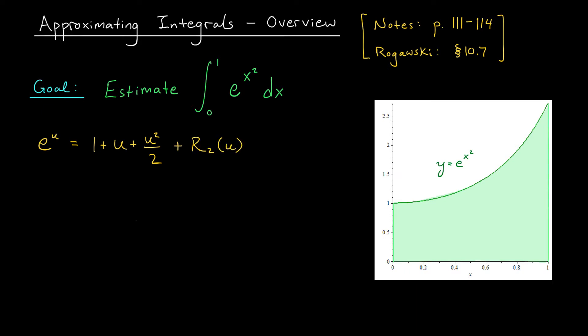Now, since we're interested in the function e to the x squared, our next step would be to make the substitution u equals x squared. I'm going to replace all the u's on the right-hand side with x squared. We get a Maclaurin polynomial of this function given by 1 plus x squared plus x to the 4 over 2. And of course, I have to make the same replacement of u with x squared in my remainder term. That gives me a remainder of r2 of x squared.